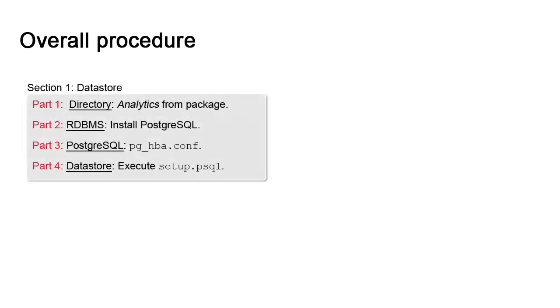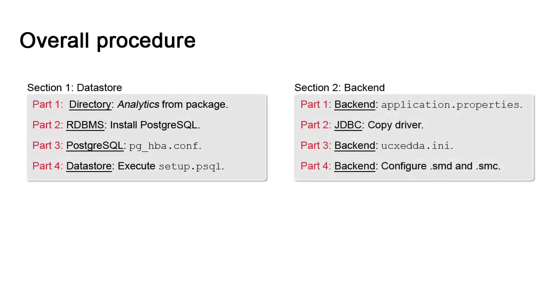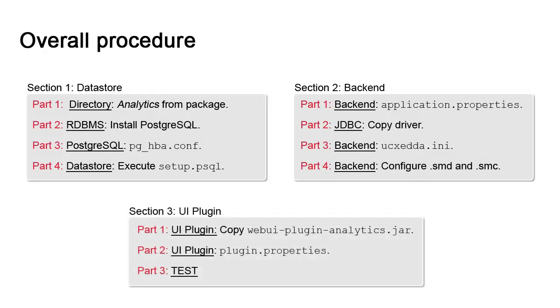The procedure has three sections. The first shows how to configure the data store. The second shows how to configure the backend — a web application accessible via REST API that is the central technical component responsible for data exchanges between the various parts of the AA configuration and analytics. In the last section, the UI plugin serves the interface components to the web interface.